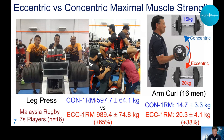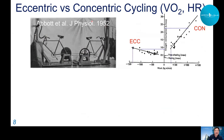A study published in 1952 compared concentric and eccentric cycling. One person cycled forward normally, the other cycled backwards (eccentric cycling). For the same oxygen consumption, work was much greater for eccentric cycling. And for the same work, eccentric cycling required much less oxygen than concentric cycling.